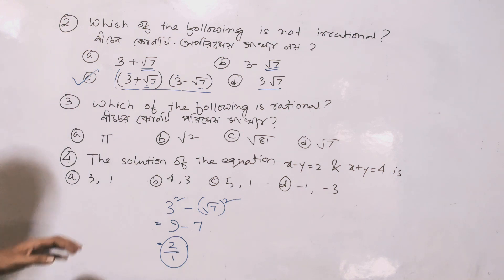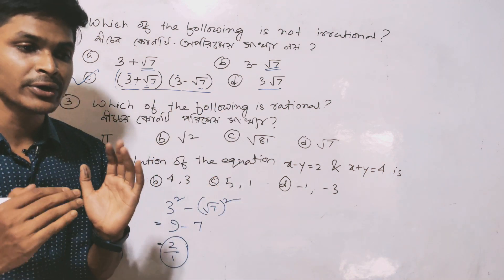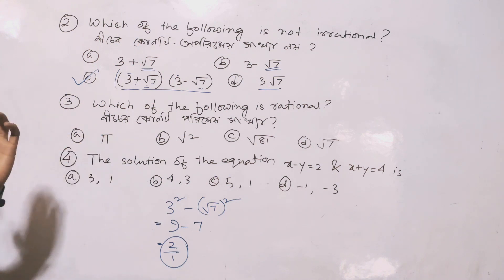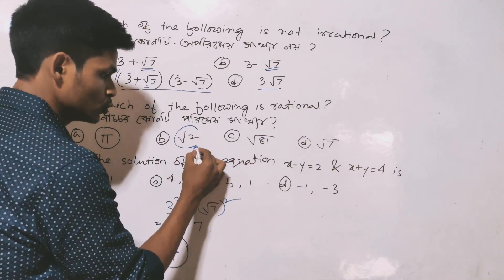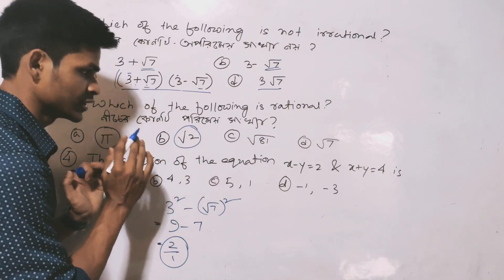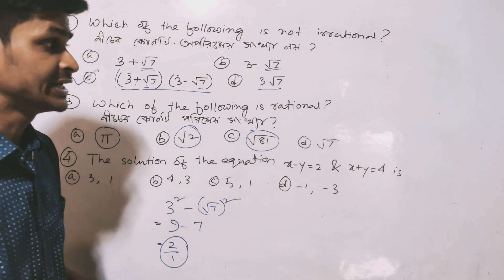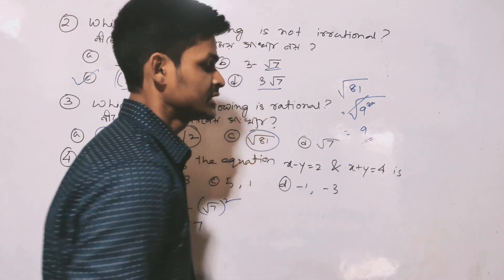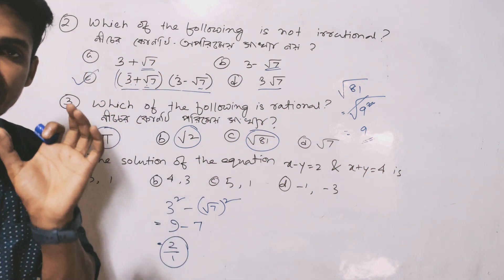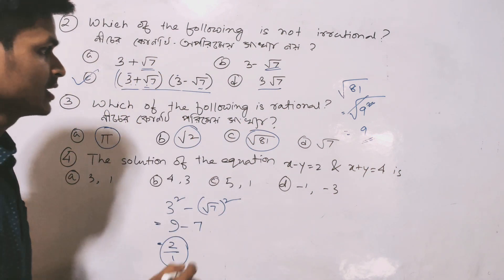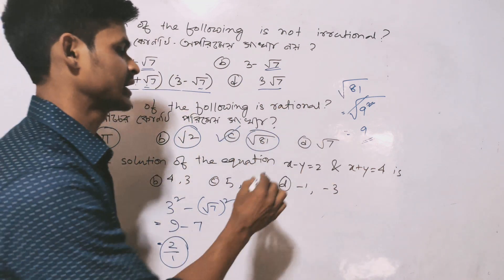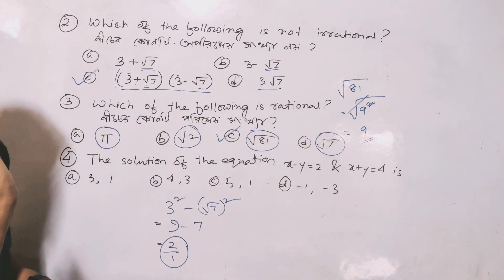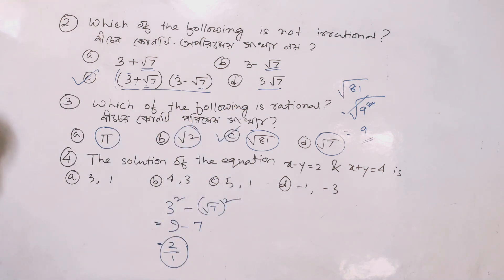Next question: which of the following is rational? Pi is irrational. √2·√3 — since 2 and 3 are prime numbers, this is irrational. But √81: 81 is not a prime number; 81 = 9², so √81 = 9. Since 9 is a rational number, √81 is rational. The other options involving prime numbers under the root are irrational.